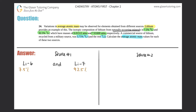They gave us the masses of each: 6.01512 AMU and 7.01600 AMU. 'Respectively' just means that whichever one they said first — lithium-6 — is the first one they're talking about when they list things. So lithium-7 would correspond to the second number they give. That's what 'respectively' means.